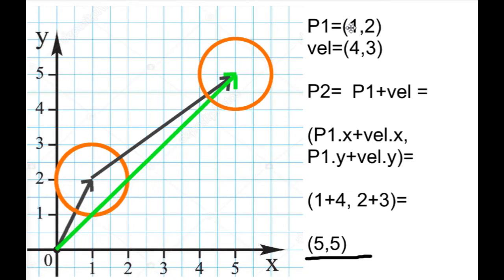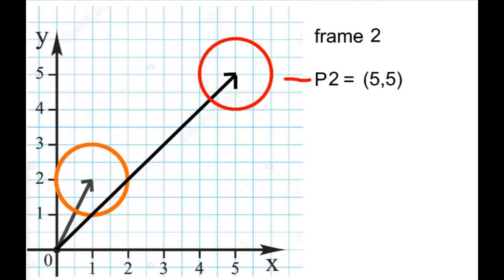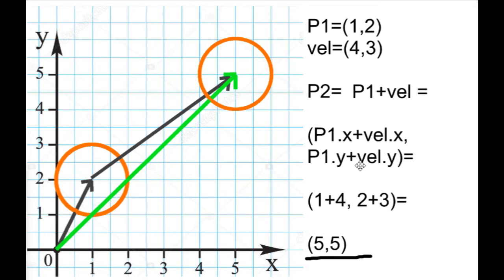The x component of the first position vector is 1, and the x component of the velocity vector is 4. So 1 plus 4 will be the x coordinate of the second position vector, and 2 plus 3, which is also 5, will be the y position of the second position vector. And that's exactly where the ball is in the second frame. So this is how I add vectors together.